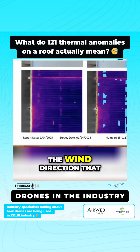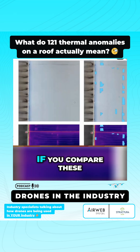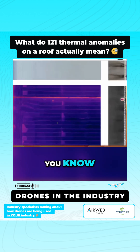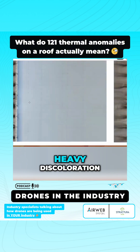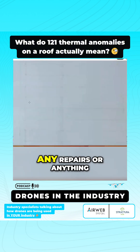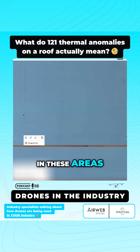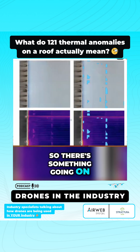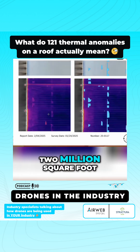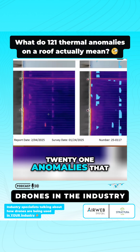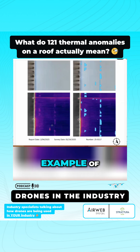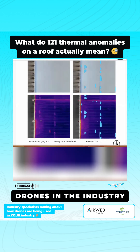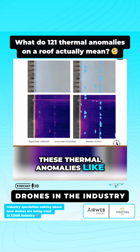There's a correlation with the wind direction if you compare these thermal anomalies to visual conditions — it's not like we see debris or heavy discoloration, or any repairs in these areas. So there's something going on in this 1.2 million square foot roof where we found 121 anomalies. This is a great example of what you hope to see.